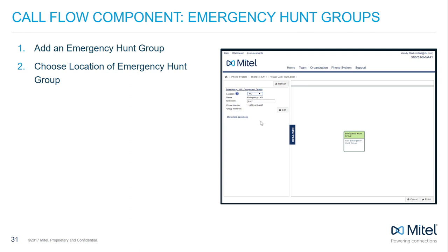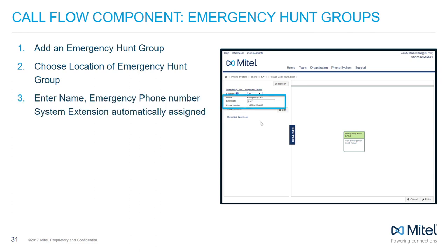The user interface for the emergency hunt group is far simpler than the regular hunt group due to the dedicated nature of this call component. Since each emergency hunt group is dedicated to a location registered with emergency services, we first need to choose the location. Only active locations already registered with emergency services but not yet assigned to a hunt group are listed in the location drop-down. The system extension assigned is based on the location's emergency number registered with emergency services.